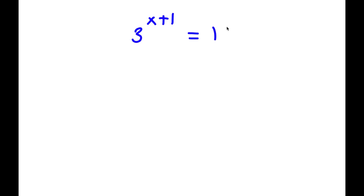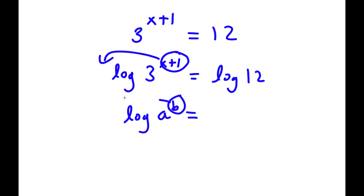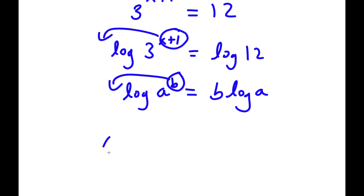In this problem, I have 3 to the power of x plus 1 is equal to 12. To solve this problem, I'm going to first start by taking the log on both sides. So now I have log of 3 to the power of x plus 1 is equal to log 12. I'm going to move x plus 1 to the front, because if I have log a to the power of b, I can move b to the front, so this equals b times log a. So now I have x plus 1 times log 3 is equal to log 12.